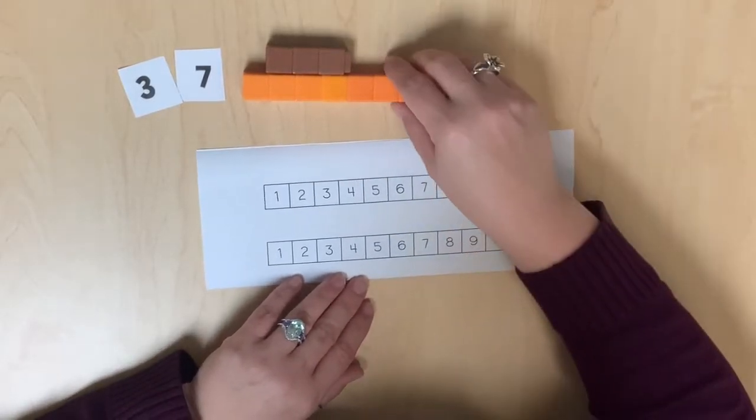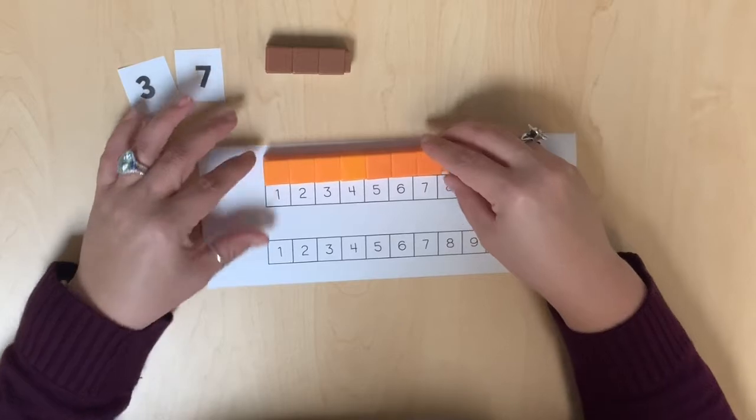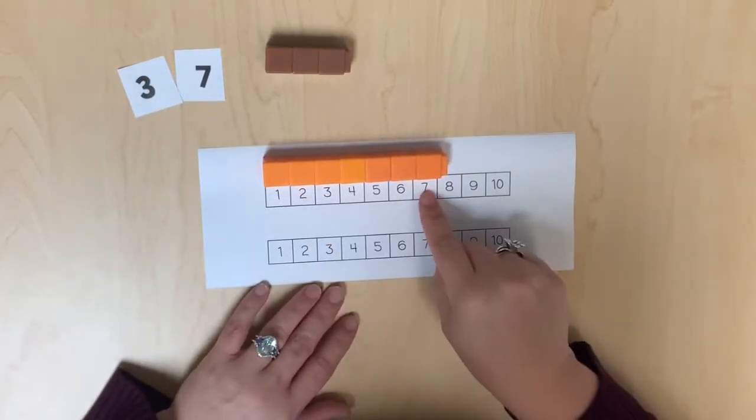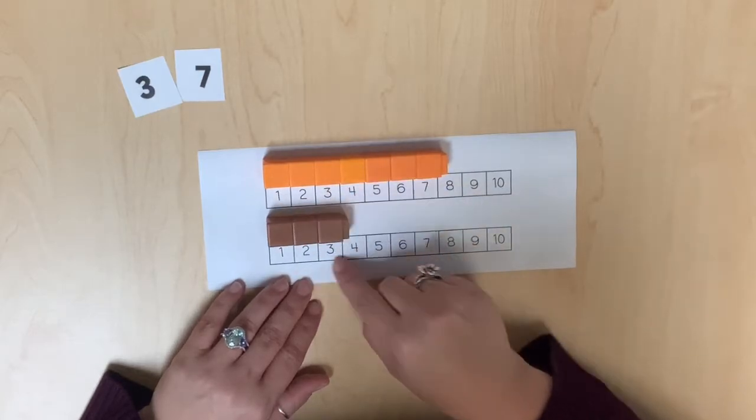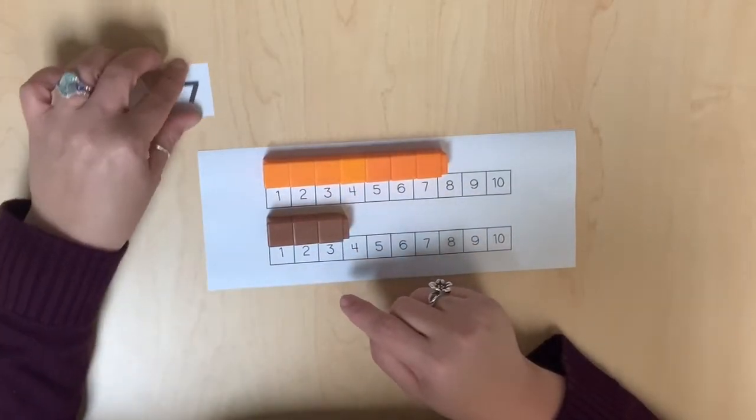Each linking cube corresponds to a space on the number path. Label each number path with a number card showing the two quantities that are being compared.